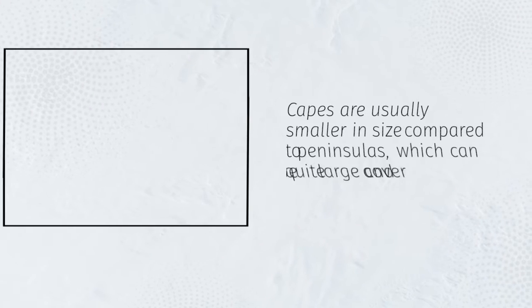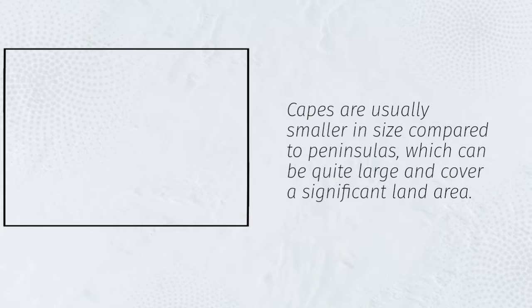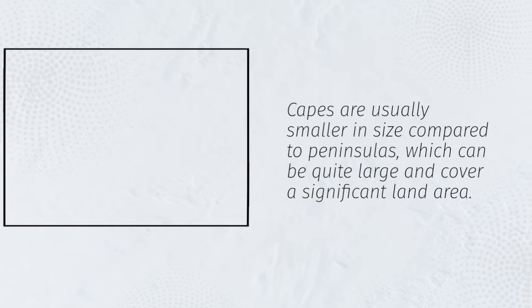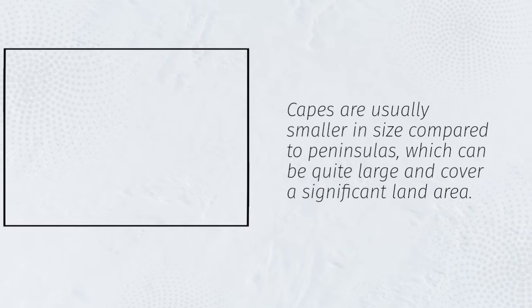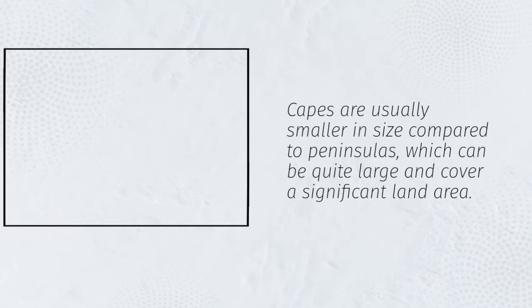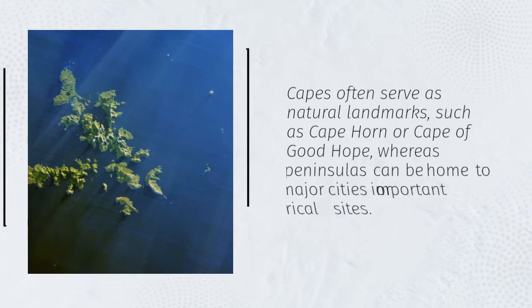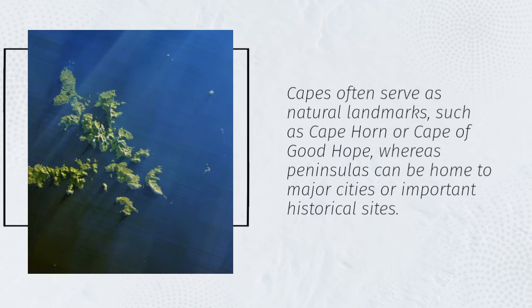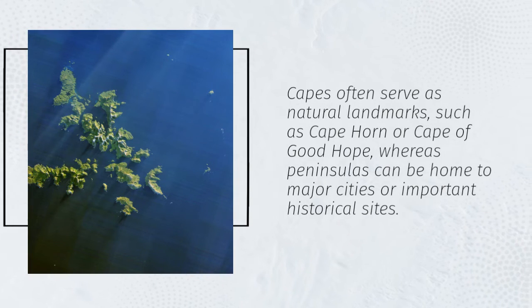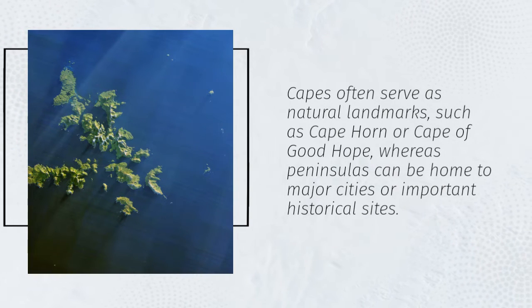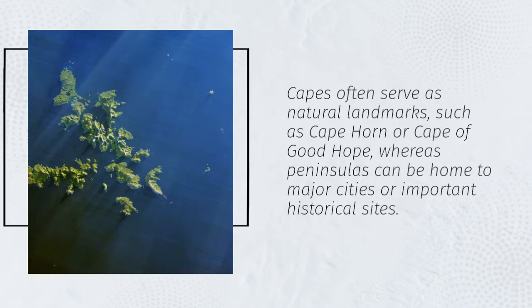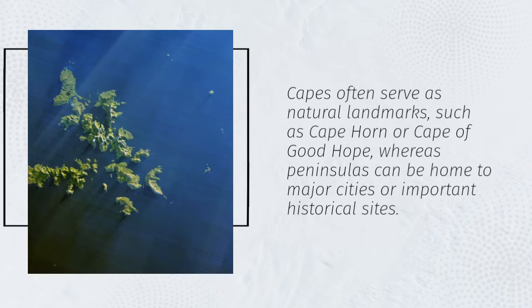Capes are usually smaller in size compared to peninsulas, which can be quite large and cover a significant land area. Capes often serve as natural landmarks, such as Cape Horn or Cape of Good Hope, whereas peninsulas can be home to major cities or important historical sites.